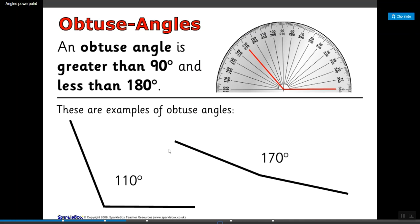So 110 is greater than 90 but still less than 180 so it's obtuse. 170 degrees is greater than 90, still less than 180, so it is also obtuse.